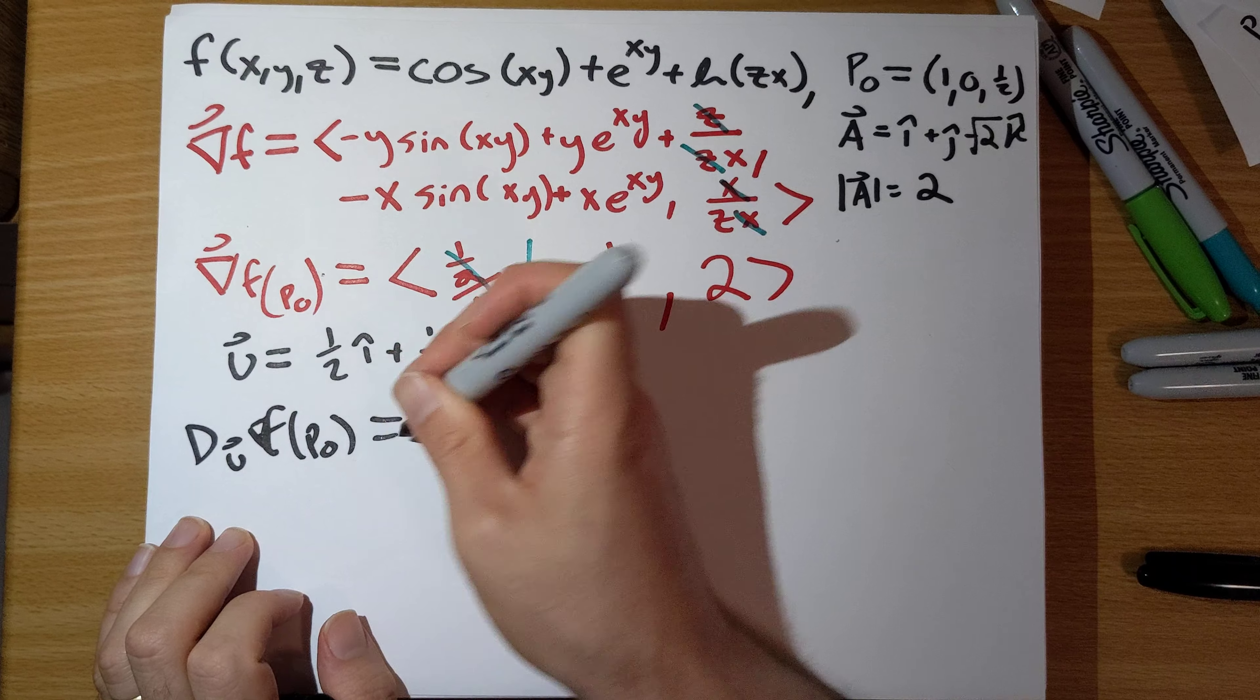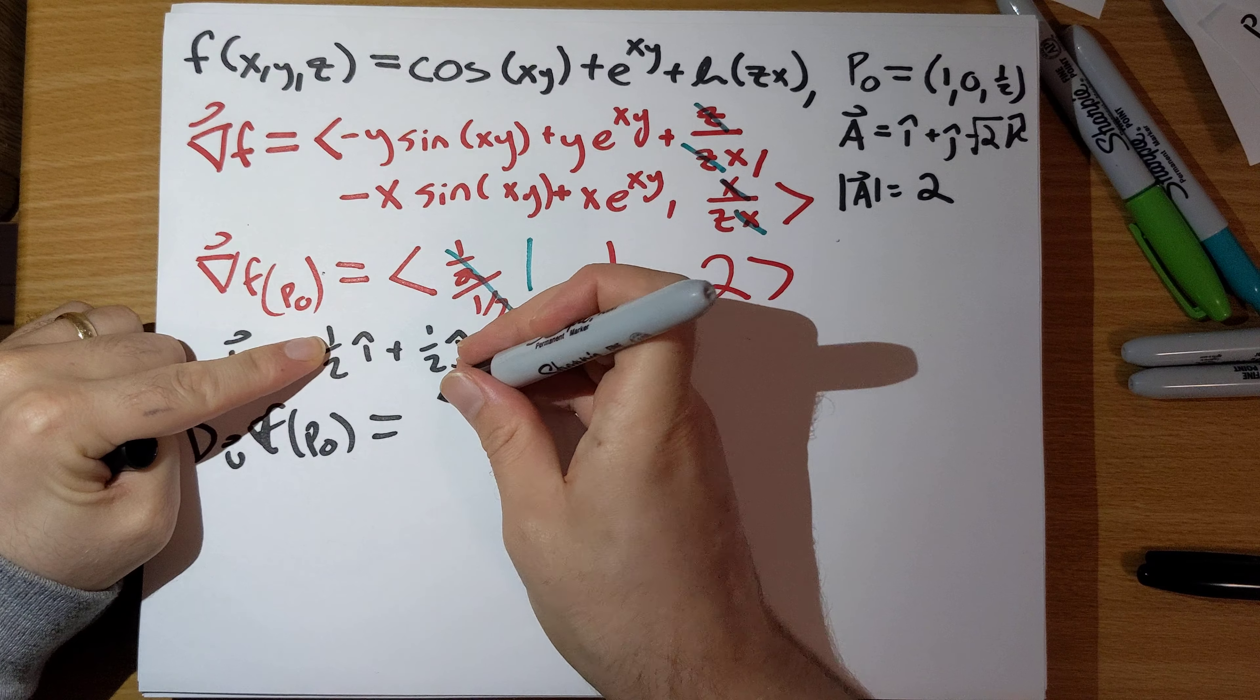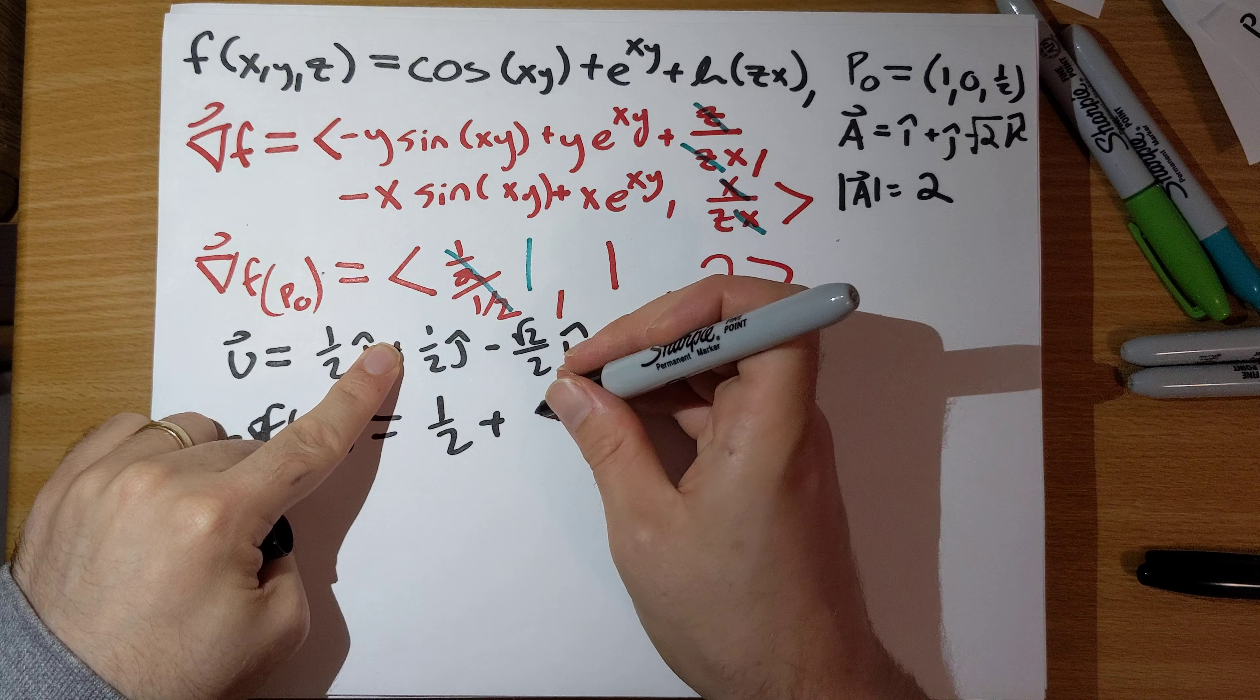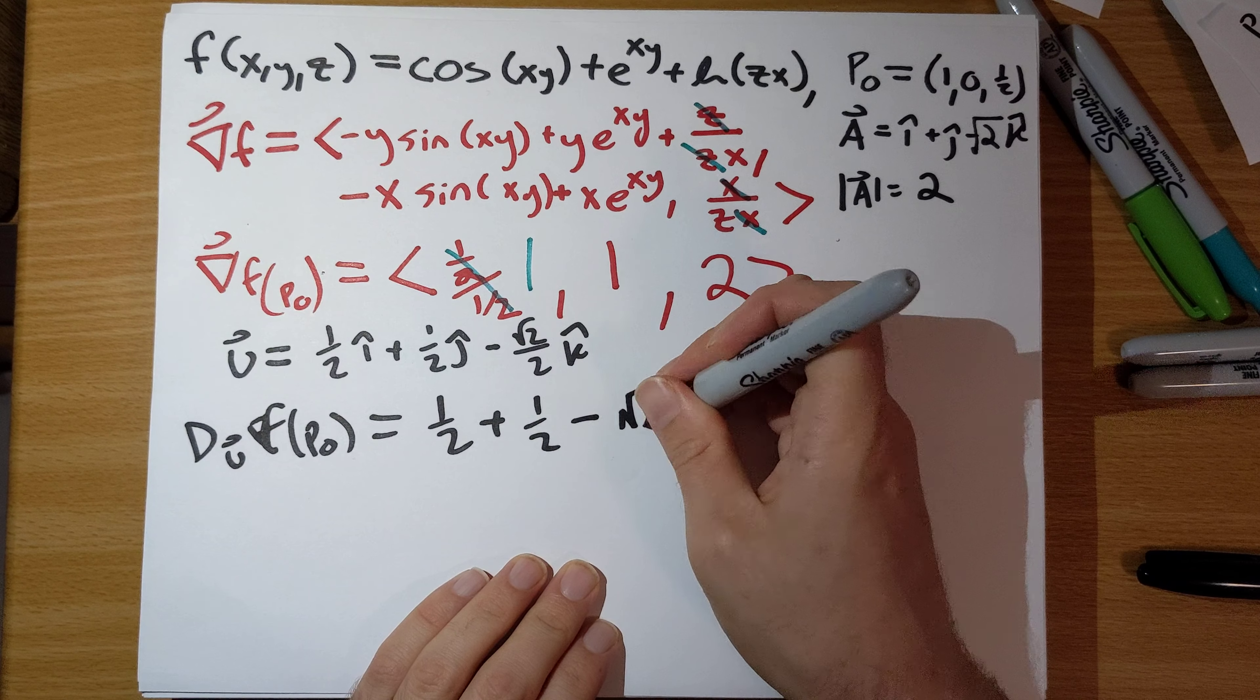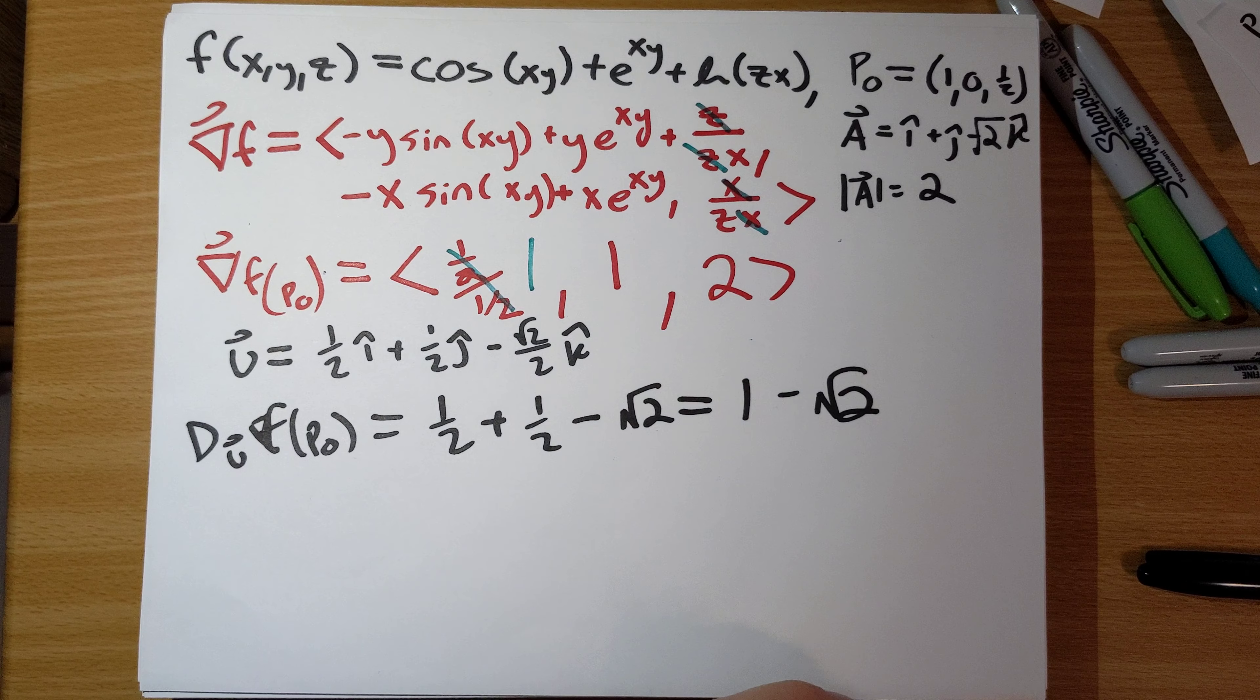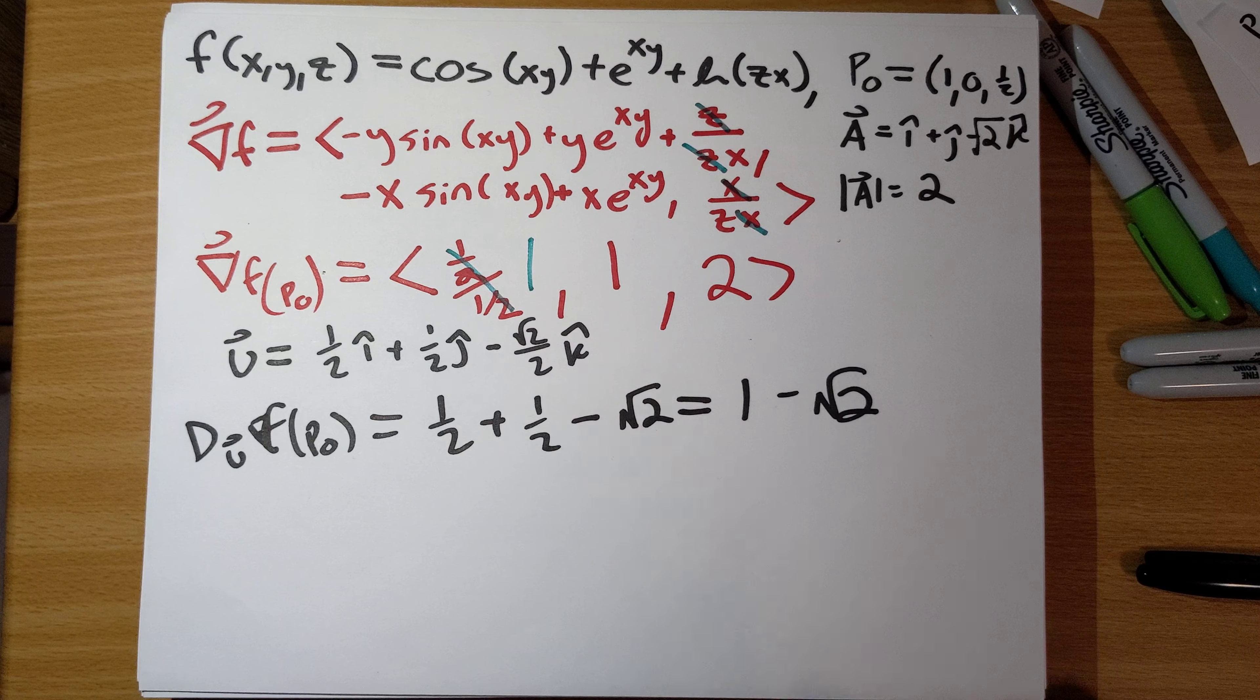So the directional derivative in the direction of f at p hat is the dot product of these two vectors. So 1 times 1 half is 1 half plus 1 times 1 half is 1 half plus 2 times negative root 2 over 2 minus root 2, so that's 1 minus root 2.